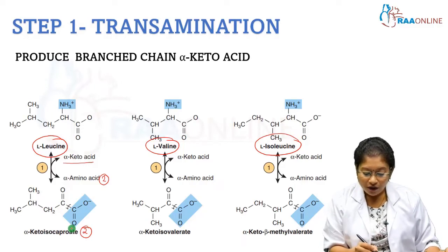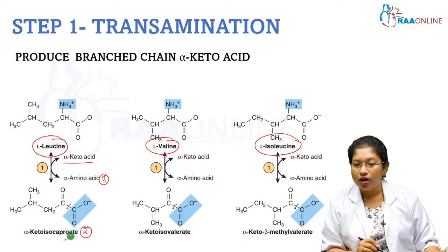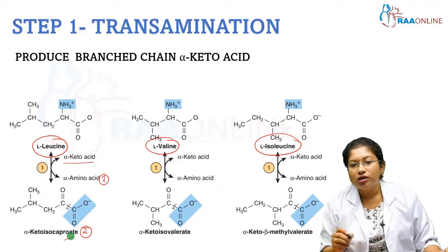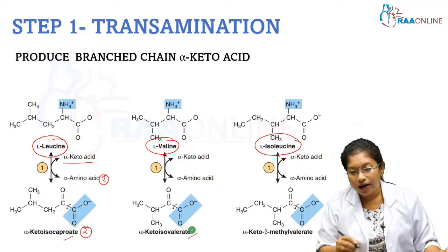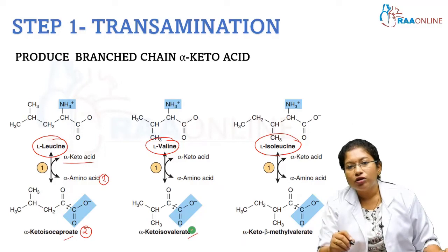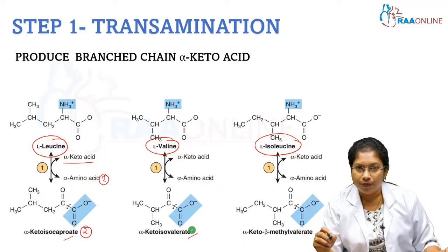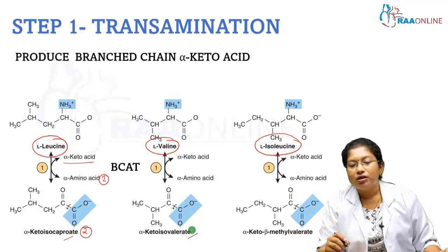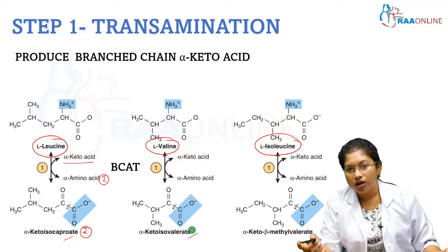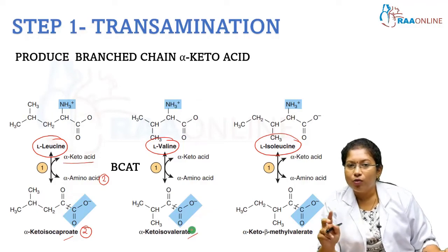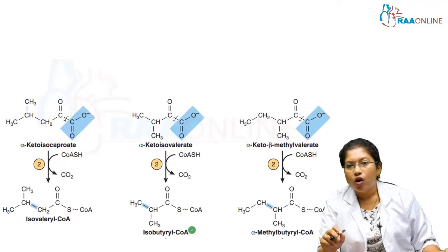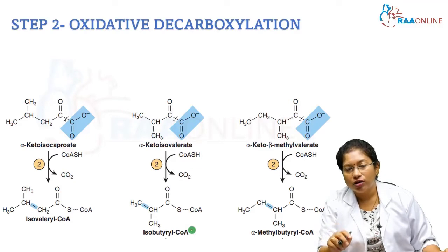Now we'll see what the alpha keto acids are. Leucine produces alpha keto isocaproate. Valine produces alpha keto isovalerate. Isoleucine produces alpha keto beta methyl valerate. The enzyme here is BCAT, branched chain amino transferase.